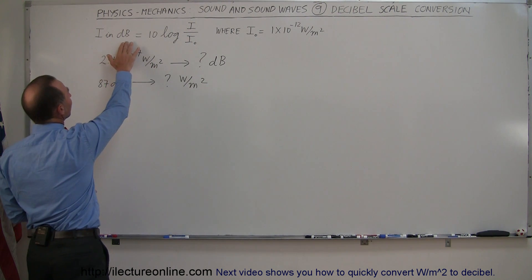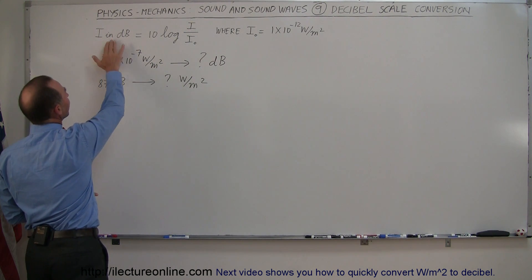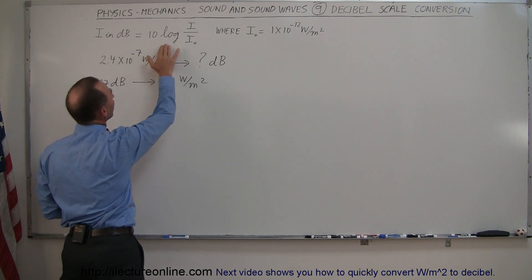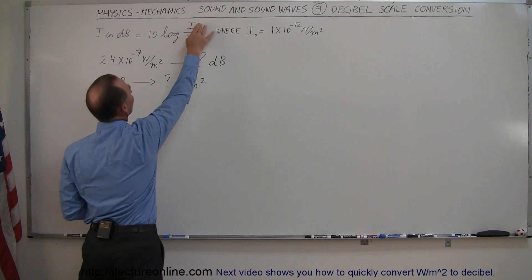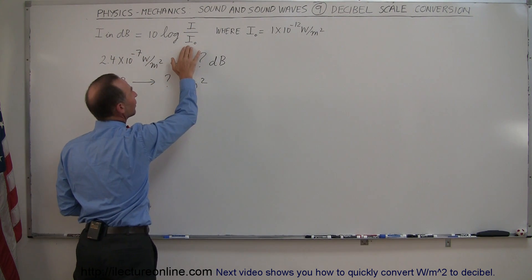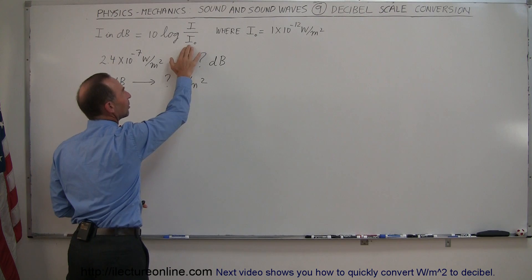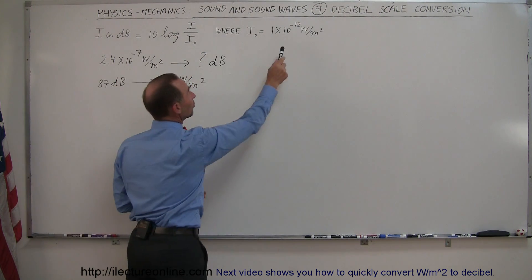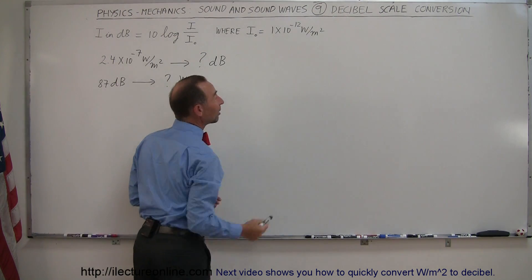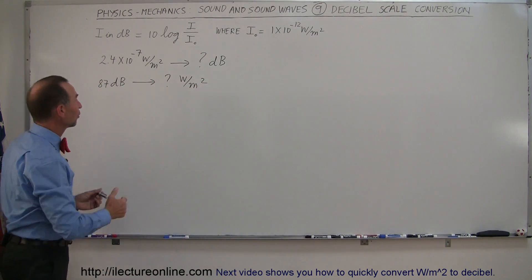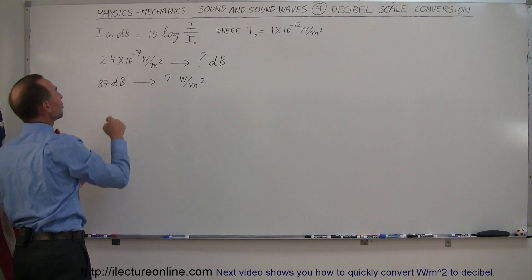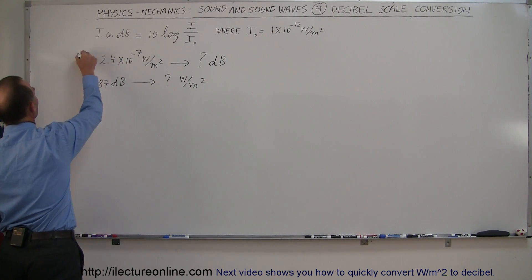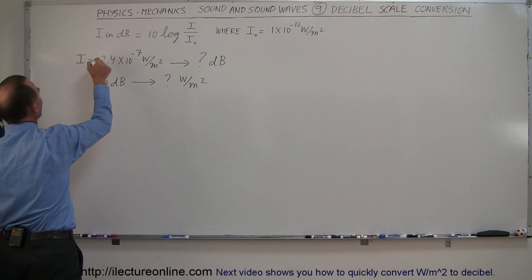We have our equation here that says that the intensity in decibels is equal to 10 times the log of the intensity that you're hearing divided by the reference intensity, which is the threshold of hearing — 1 times 10 to the minus 12 watts per square meter. So this is the intensity you're hearing; let's call that I.